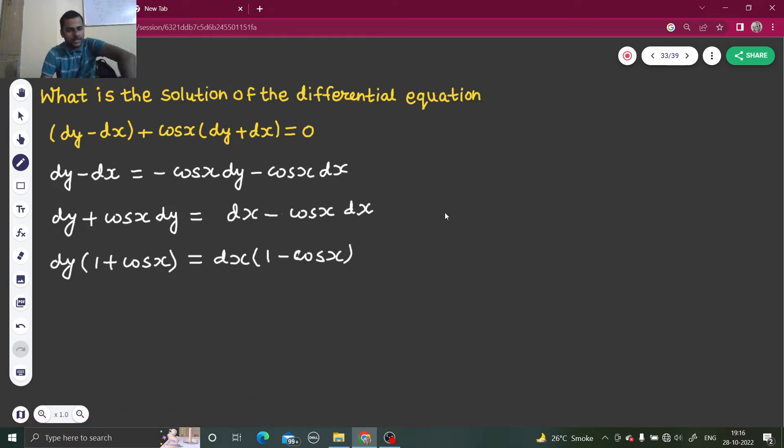Now it is looking good. So dy - I can take 1 plus cos x to the other side - so 1 minus cos x divided by 1 plus cos x dx. I can simplify this because you know that 1 minus cos 2x is 2 sine square x, and 1 plus cos 2x is 2 cos square x.